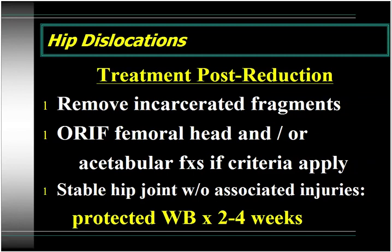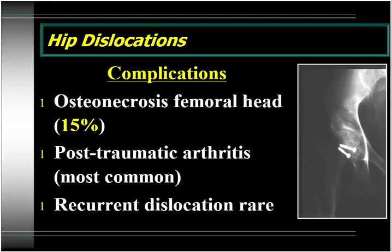If you have incarcerated fragments within the joint, those need to be removed. If you have a femoral head fracture and/or an acetabular fracture, apply the criteria for those fractures individually to determine whether the patient needs surgery. If the hip joint is stable without associated injuries, the standard treatment is protected weight-bearing for two to four weeks, after which patients typically will begin to weight-bear to tolerance. Complications include osteonecrosis of the femoral head — the overall incidence in large series is about 15%. The most common complication is actually post-traumatic arthritis. Recurrent dislocations of the hip are rare because the hip joint is inherently stable.